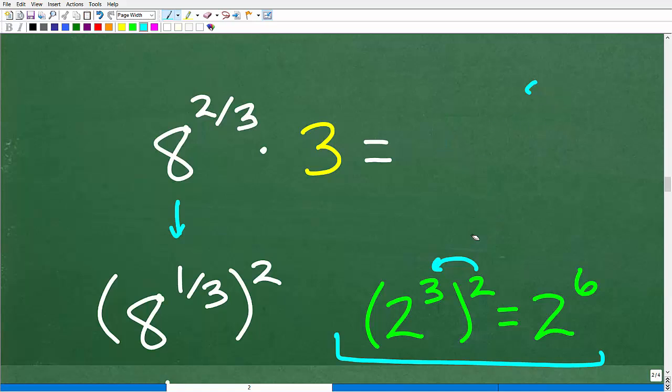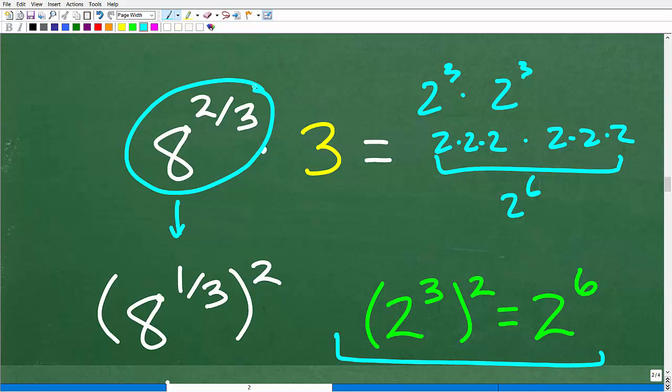This makes sense because what does 2 to the 3rd squared mean? It means take 2 to the 3rd and multiply it by itself. 2 to the 3rd times 2 to the 3rd means 3 twos multiplied by another 3 twos. And when we do this big product, we end up with 6 twos. So this property makes sense. But the great thing about this particular property is that we can use it to break up a fraction like this.